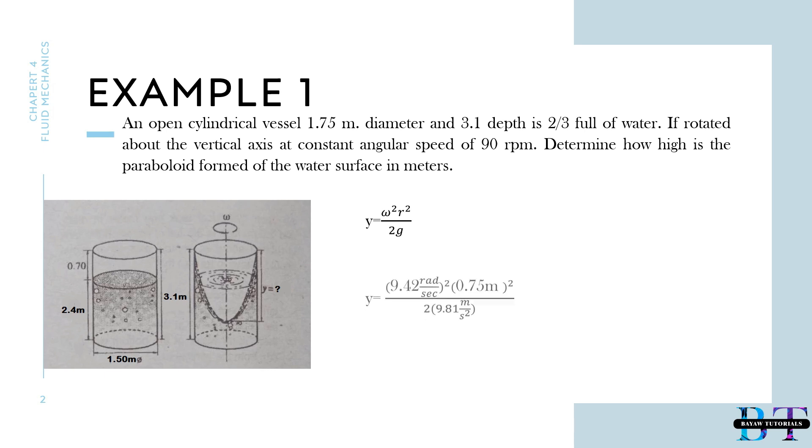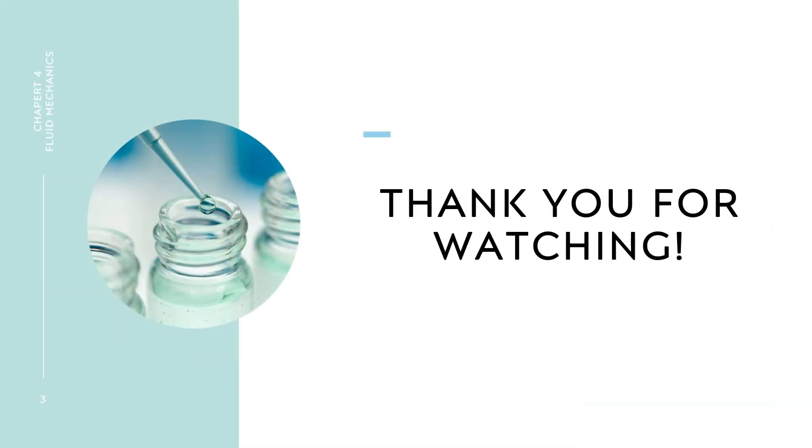Let's plug in the given in our equation. So we have 9.42 rad per second squared times 0.875 meters squared all over 2 times 9.81 meters per second squared. So the height of our paraboloid is equal to 2.51 meters.